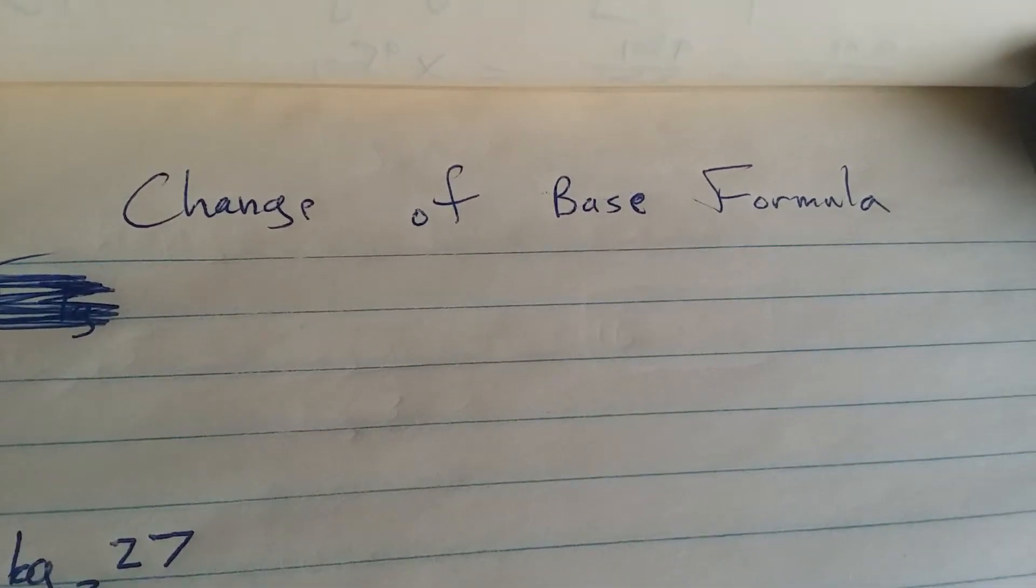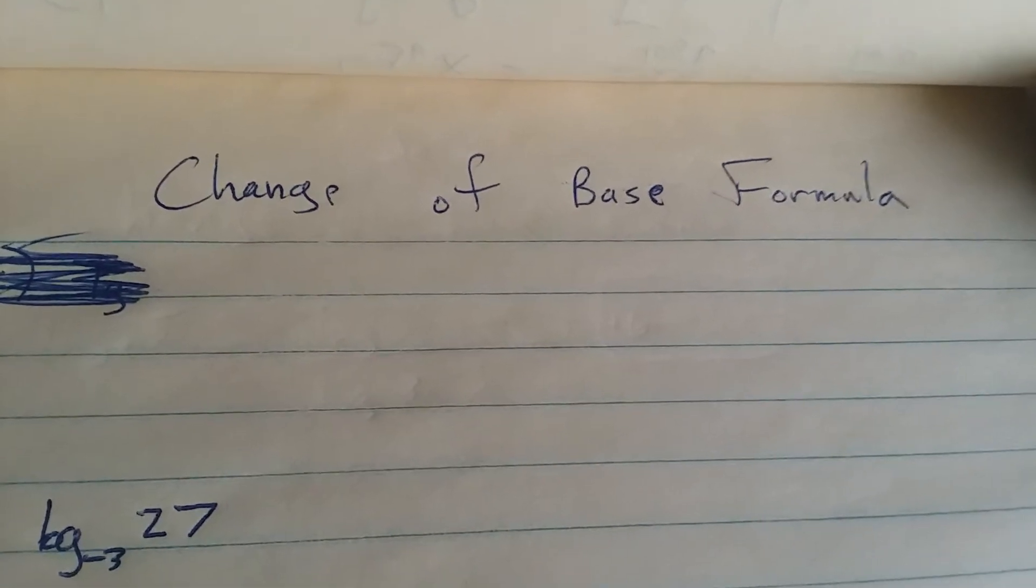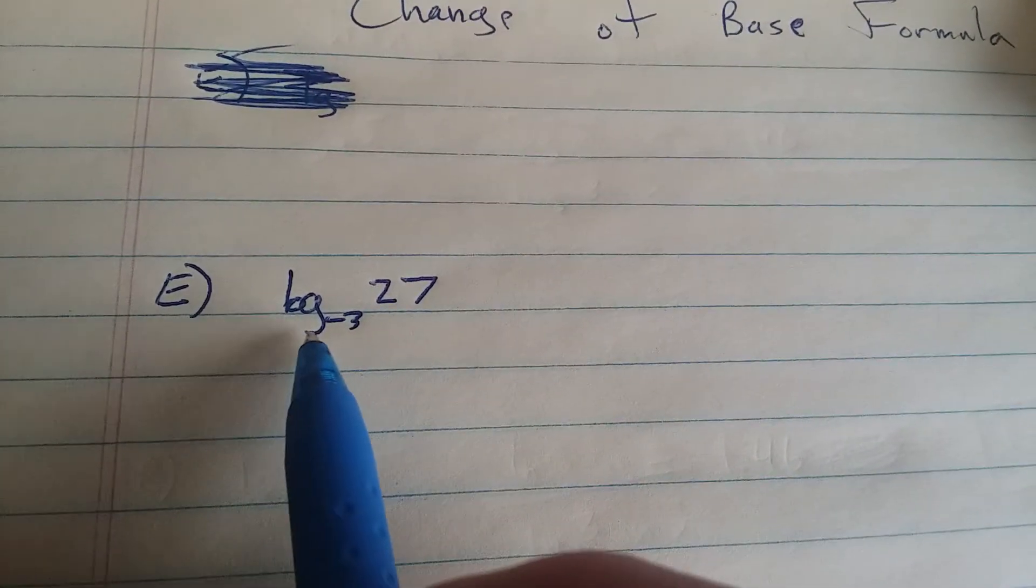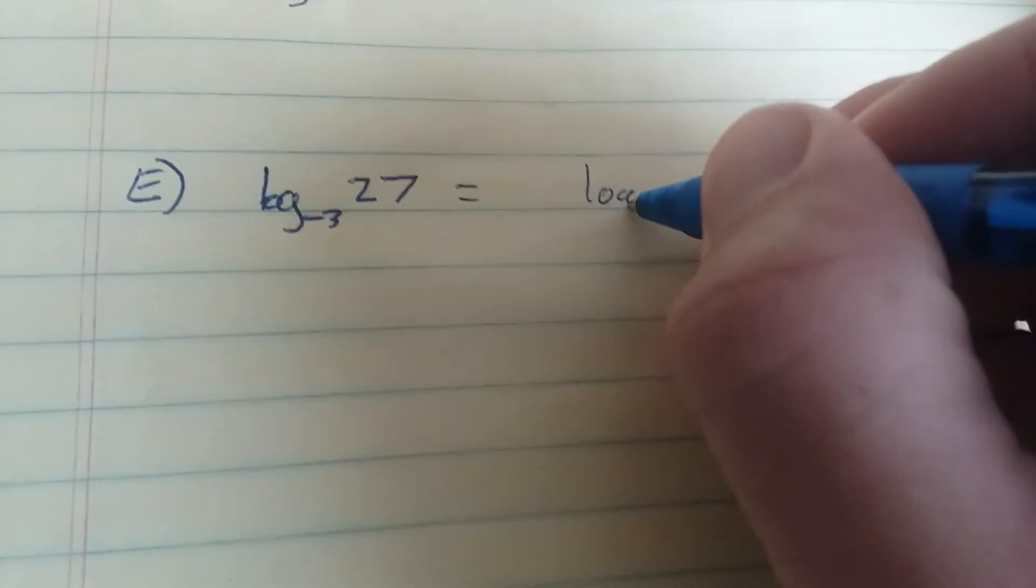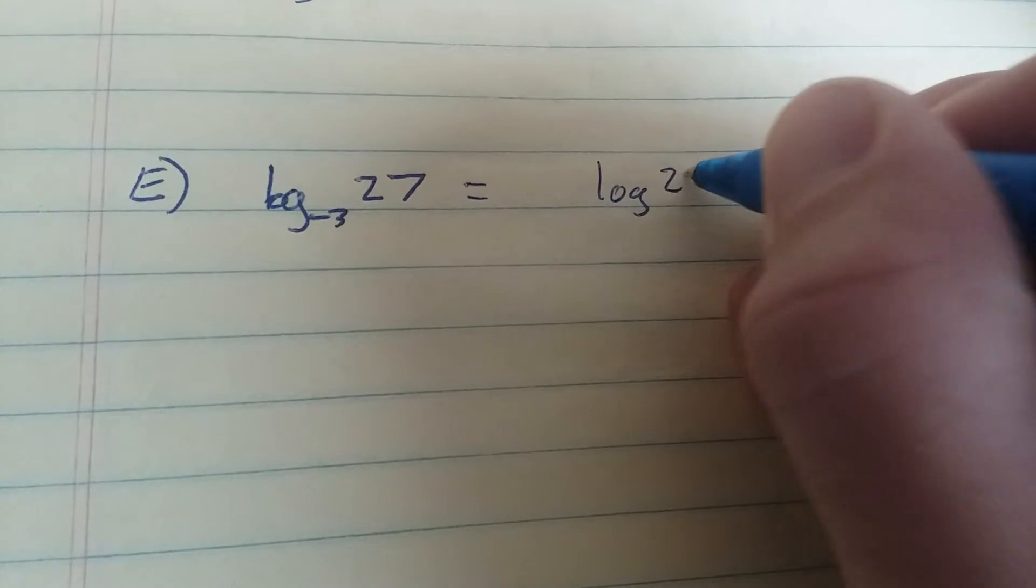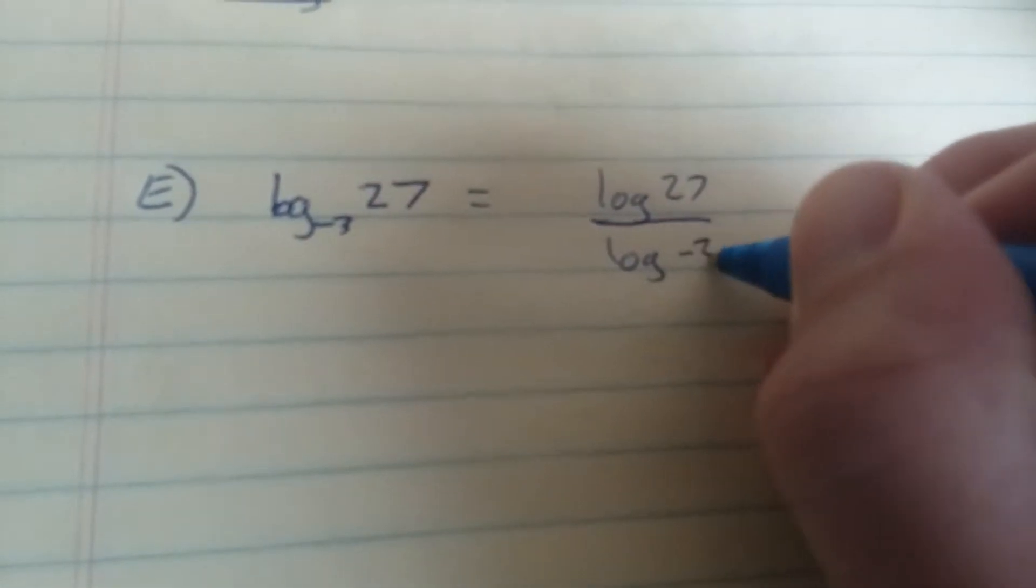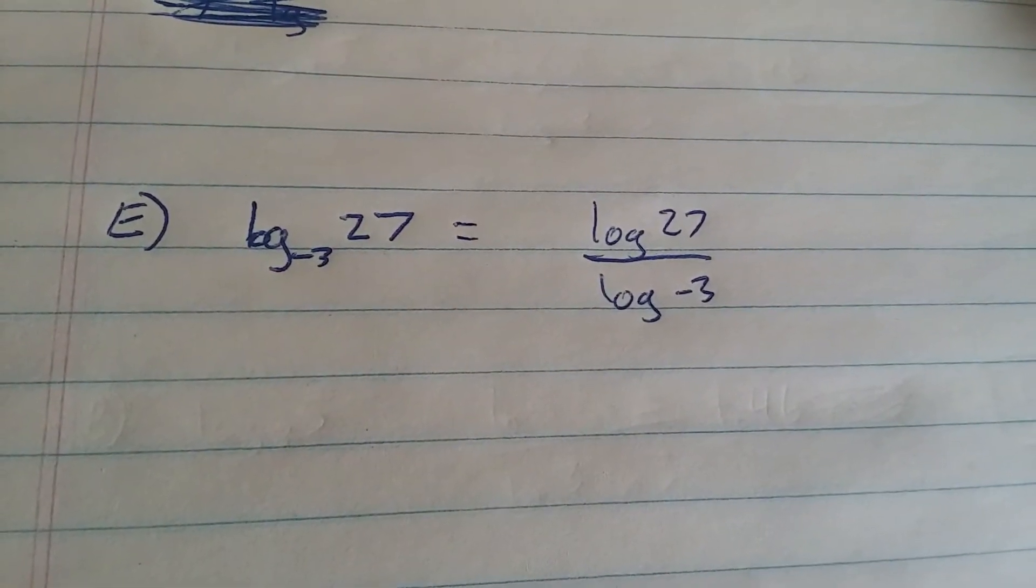Hello everyone, I have some more information on the change of base formula. If you have log base negative 3 of 27, that is going to be log of 27 over log of negative 3.